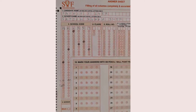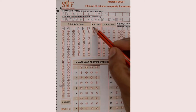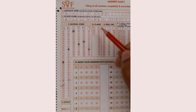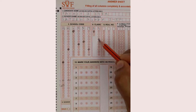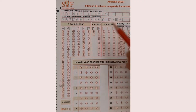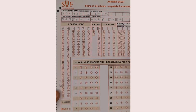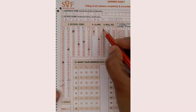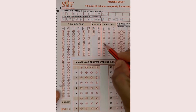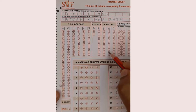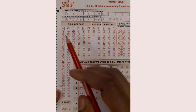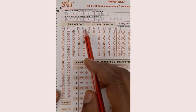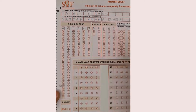For the class field, if you are in grade 3 write 0-3 and circle 0 and 3. If you are in grade 1 write 0-1, and if you are in grade 10 write 1-0. For the roll number, you will receive it along with your admit card. For example, if your roll number is 587, fill in 5, 8, 7. Your complete roll number would then be MH-0547-03-587.